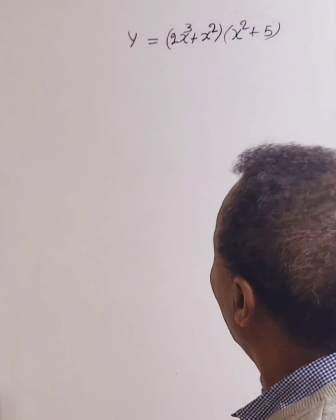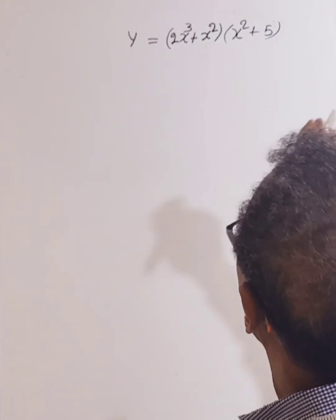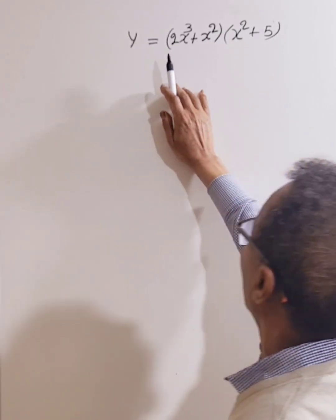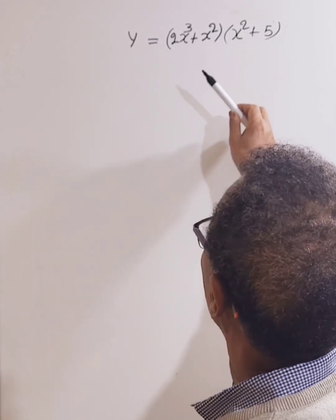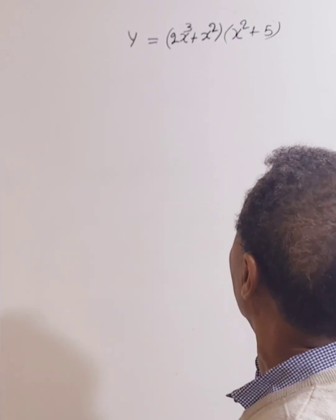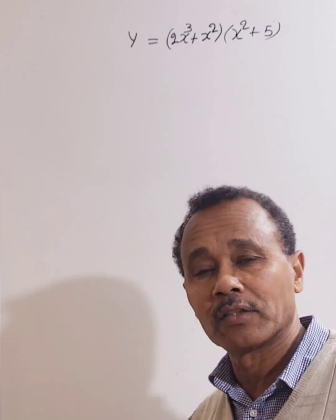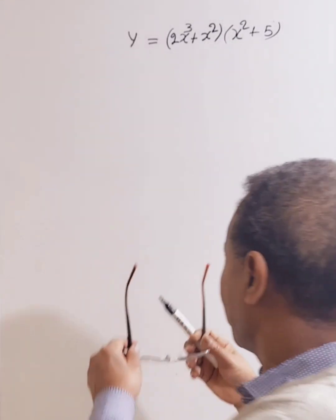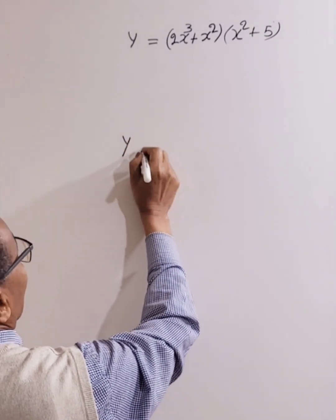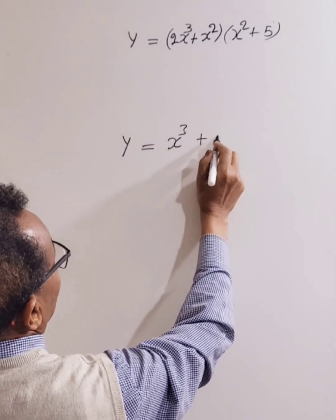Hello everyone. Let's work through this differentiation question. y equals 2x to the power 3 plus x squared, times x squared plus 5. Before I differentiate this one, let's do one simple example first. Let's differentiate y equals x to the power 3 plus 3.